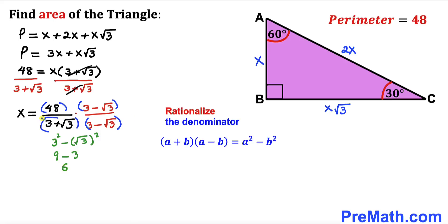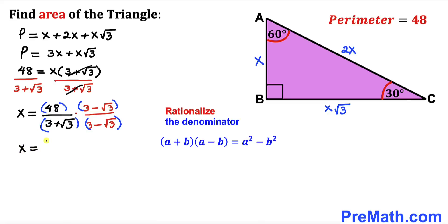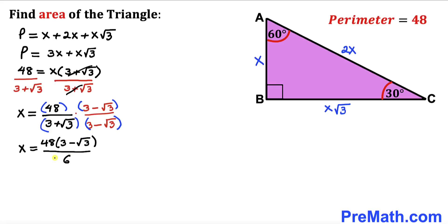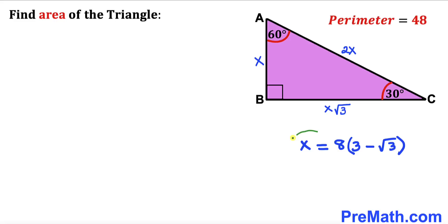So the denominator simplifies to six. Therefore x equals 48 times the quantity three minus square root of three, divided by six. Simplifying, x comes out to be eight times the quantity three minus square root of three.